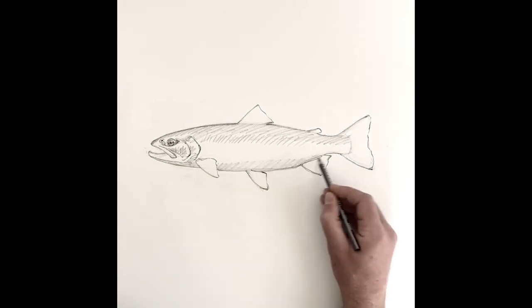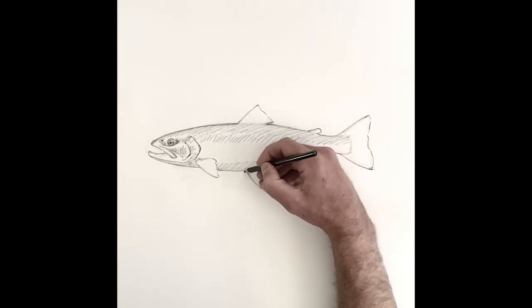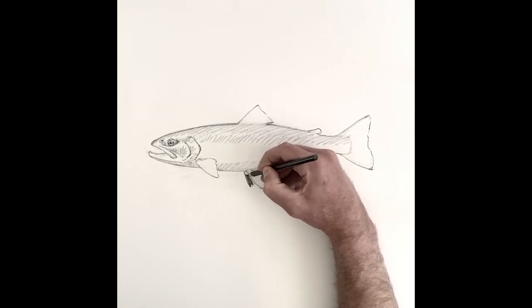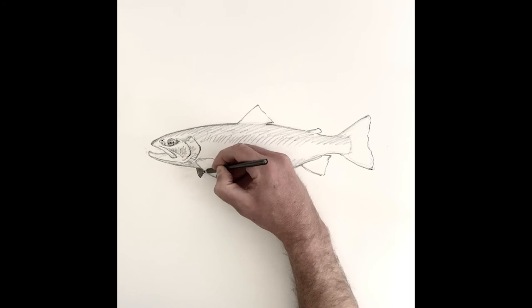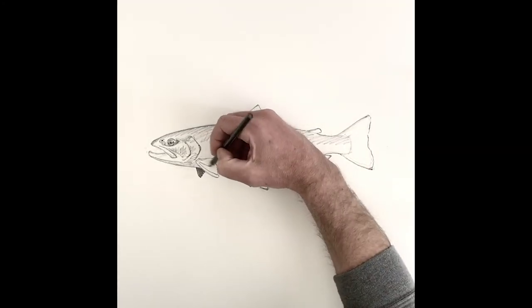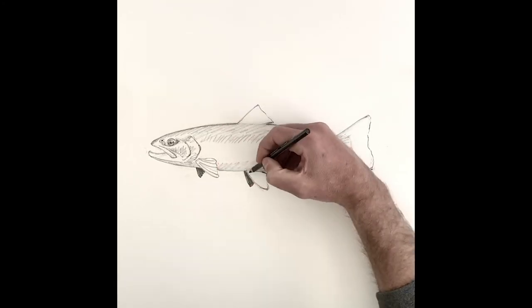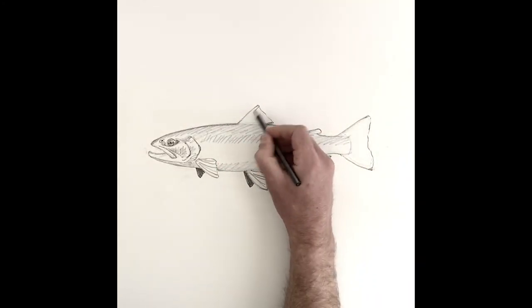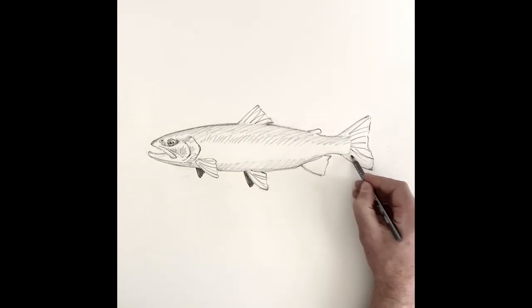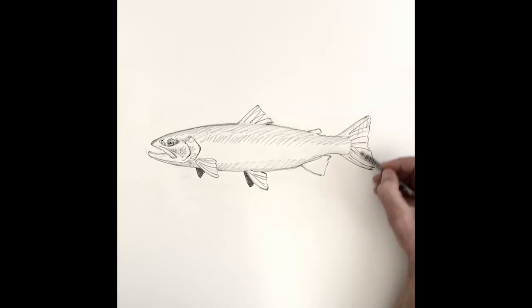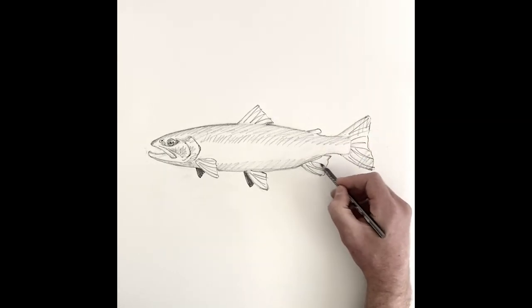As you think about getting this guy some depth, we can do the other set of fins on these ones that are pairs. So we could do the other pelvic fin back here, and the other pectoral fin there. We're just going to quickly give him a little fin texture because we want to keep this moving and get you guys drawn. Now the anal fin obviously is a single, so no pair there.